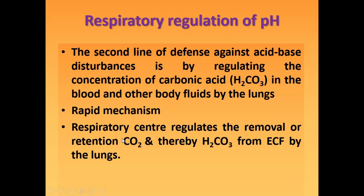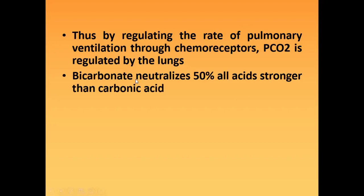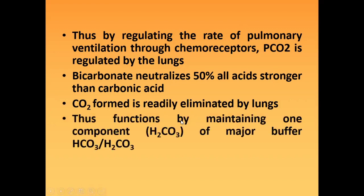If CO2 is either removed or retained, then it affects the H2CO3. Thus, by regulating the rate of pulmonary ventilation through chemoreceptors, PCO2 — that is the partial pressure of carbon dioxide — is regulated by the lungs. Bicarbonate neutralizes 50% of all acids stronger than carbonic acid. Carbon dioxide formed is readily eliminated by the lungs, thus functioning by maintaining one component, that is H2CO3, of the major buffer.